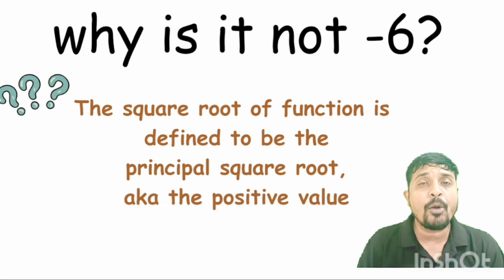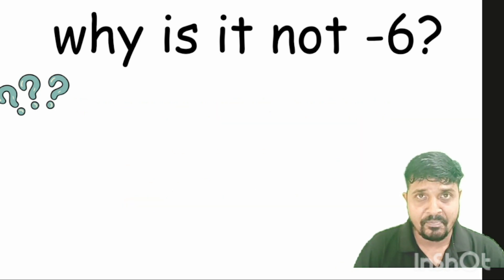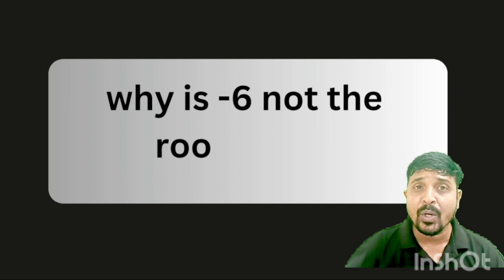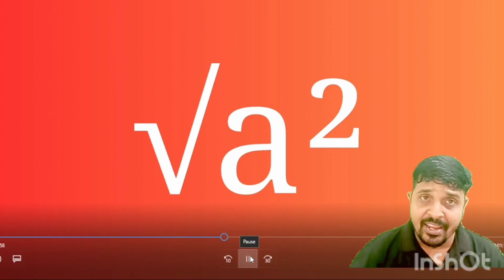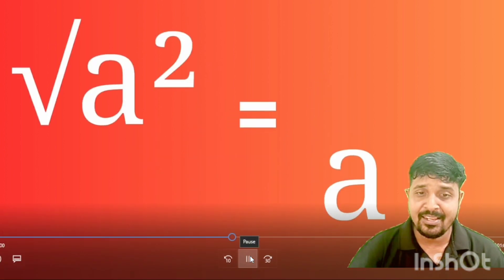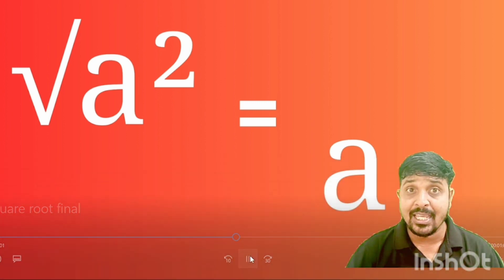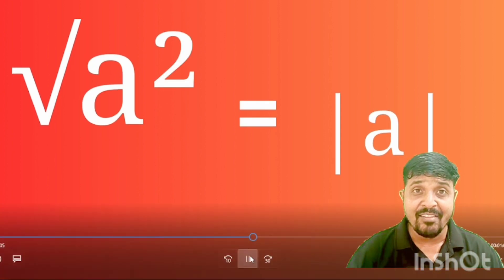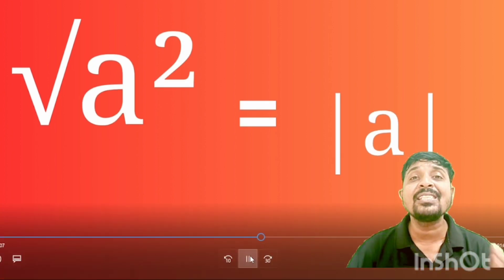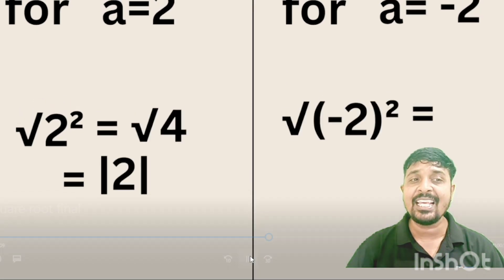Why can you not take minus 6 as the square root of 36? It is a tricky thing. Consider: what is root over a squared? Again, you might give the answer as either plus a or minus a, but remember, in both cases you are wrong. You have to take the value as modulus of a, because modulus is always the positive value.